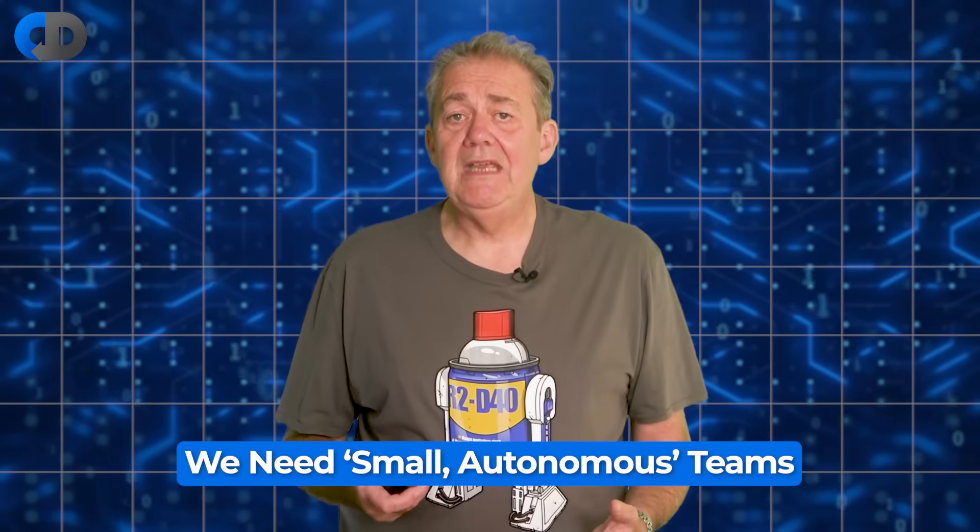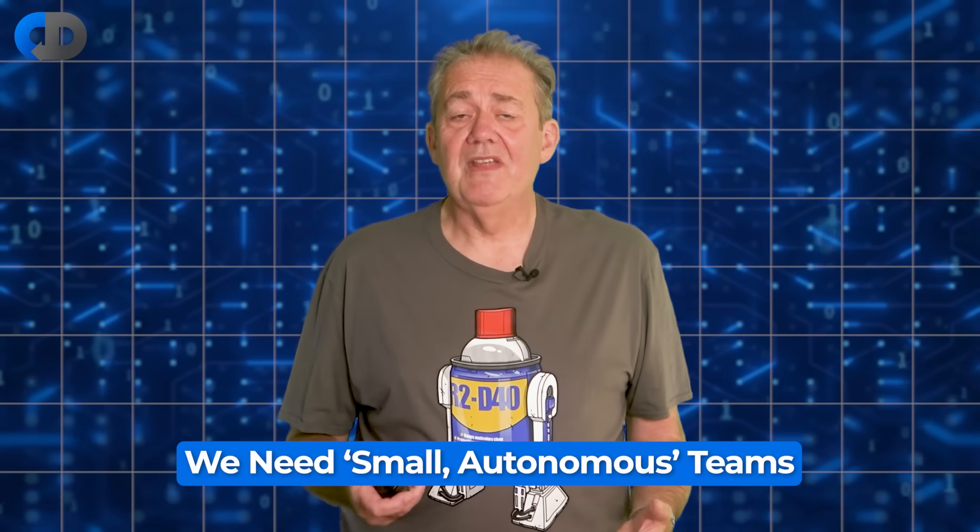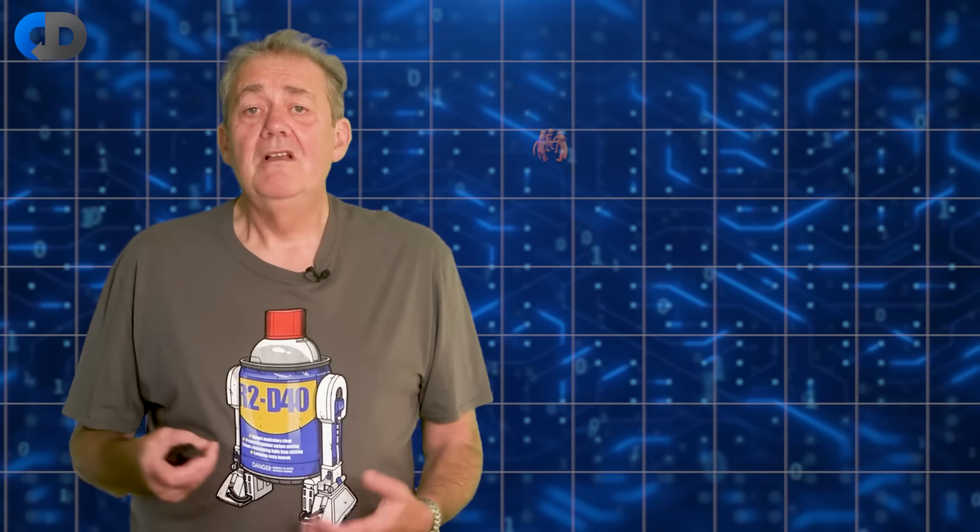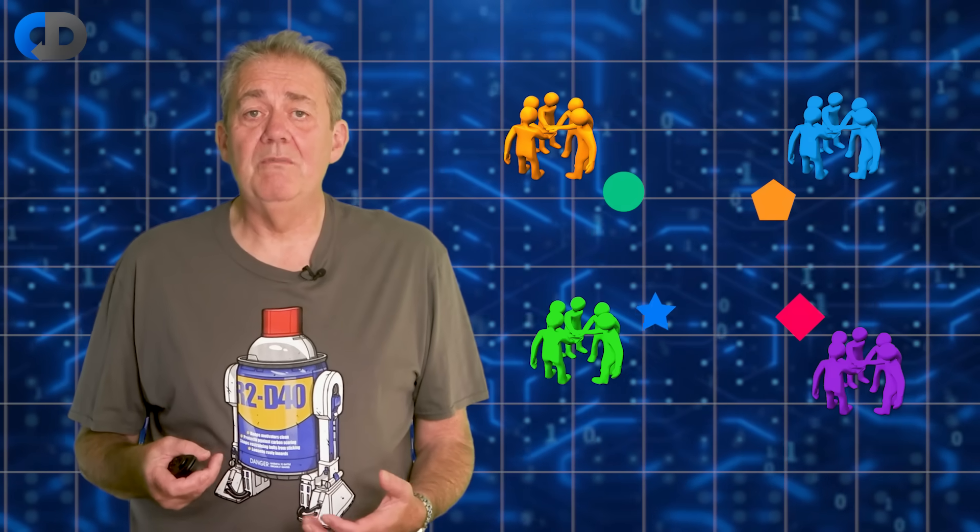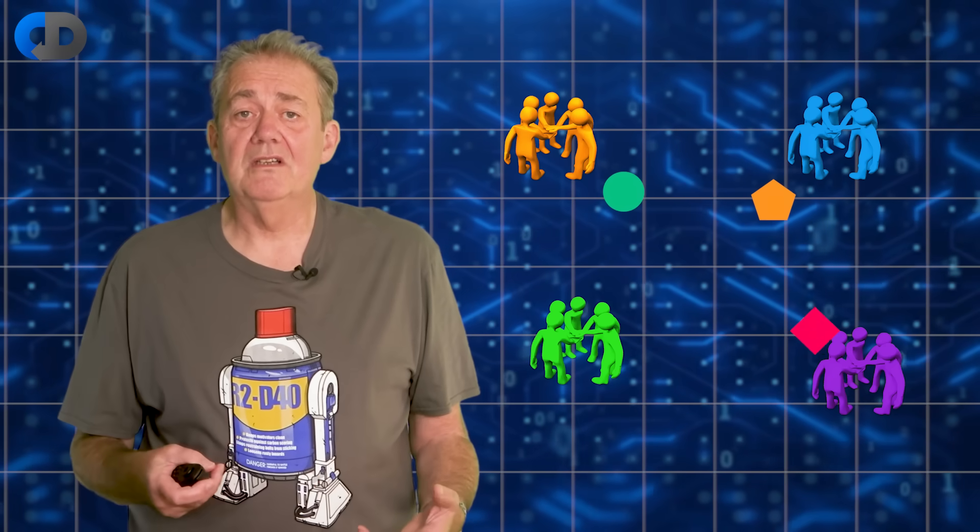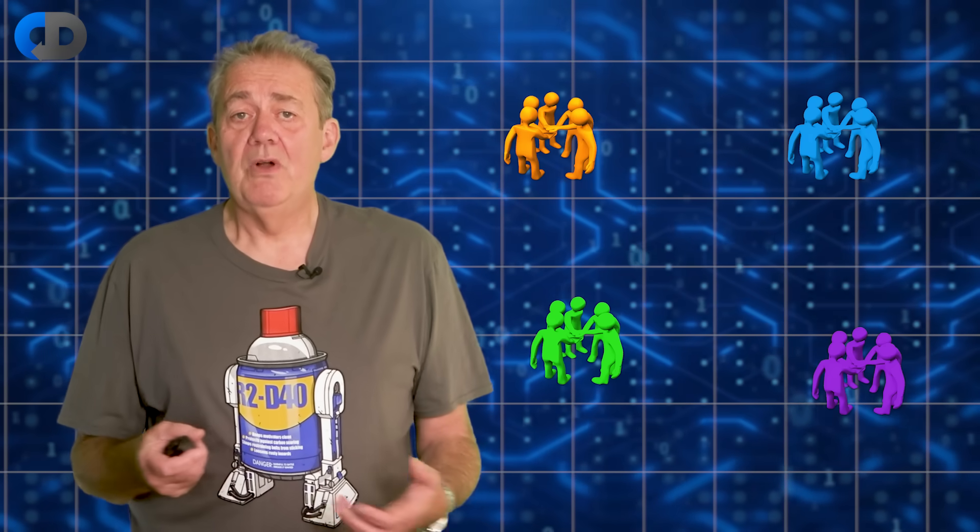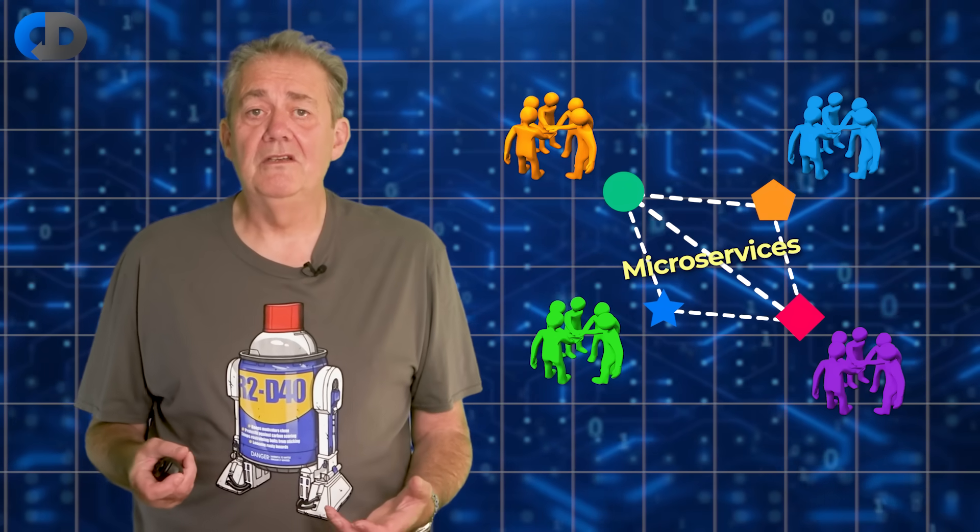So if we need small autonomous teams, what's the impact of that on our design choices? Fundamentally we need to manage the complexity of the systems that we build so that each team is able to focus on their own work, unfettered as far as we can manage it by the work of other teams. This is a lot easier said than done.